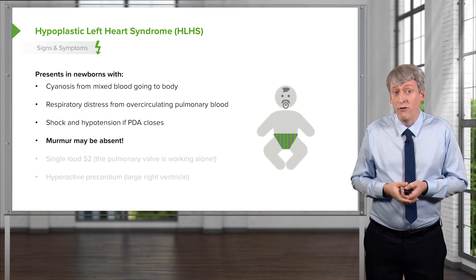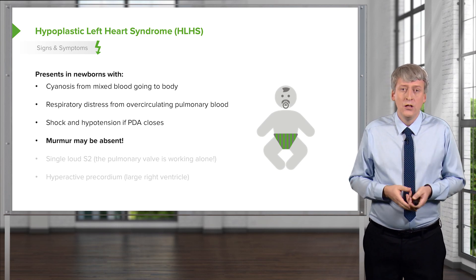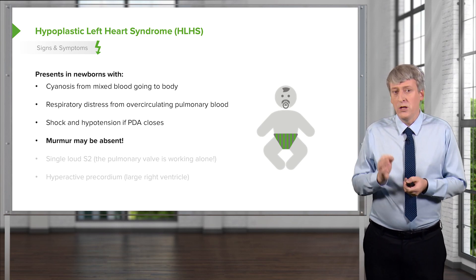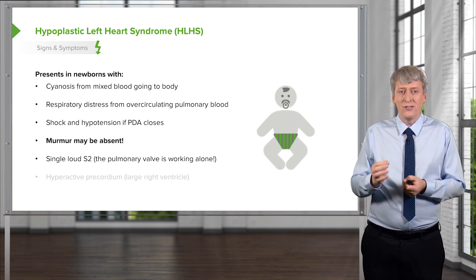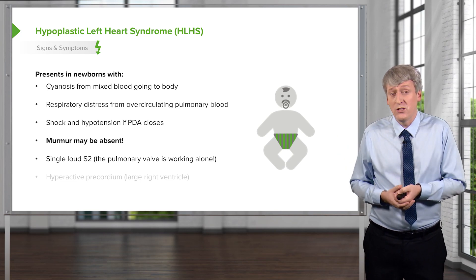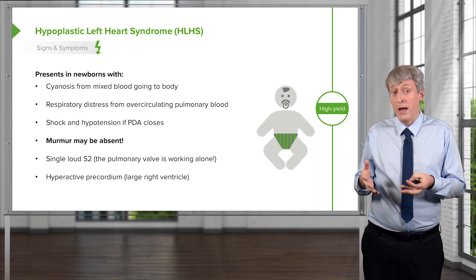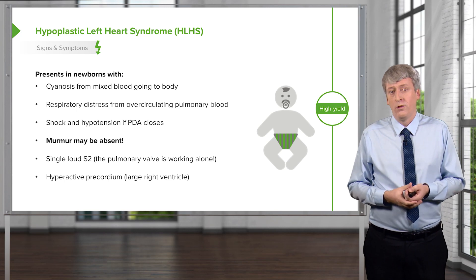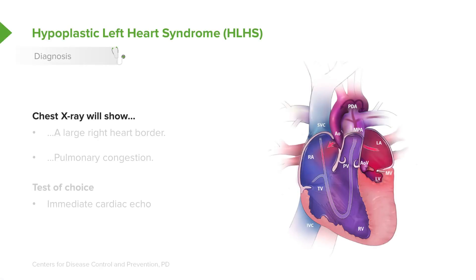These patients may not have a murmur. The appearance of this child is a cyanotic infant in respiratory distress who is hypotensive, but you might not hear a murmur. If you listen very carefully, you may hear just a single loud pulmonary valve closing — a single S2 — but no split, because the aortic valve really isn't doing much of anything. They will often have a hyperactive precordium, and you can palpate that right ventricle beating through the chest wall. An X-ray will show a very large right heart border — the right atrium and right ventricle appear enlarged and bulge into the right side of the X-ray. Because of pulmonary over-circulation, you'll also see pulmonary congestion and prominent blood vessels.